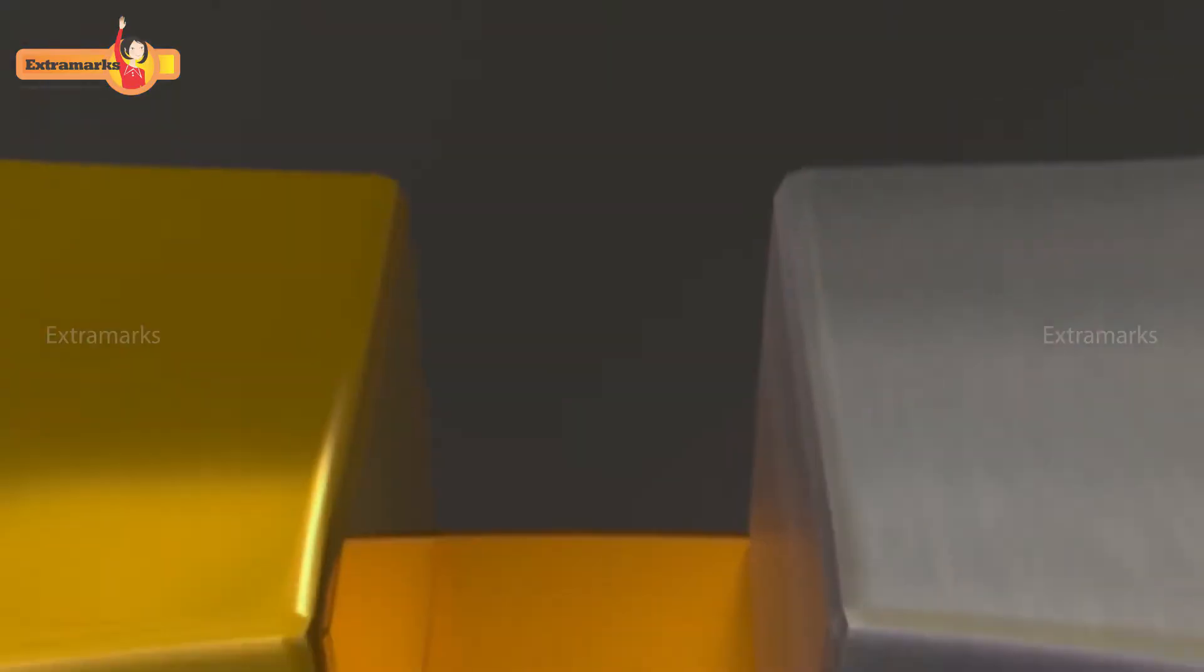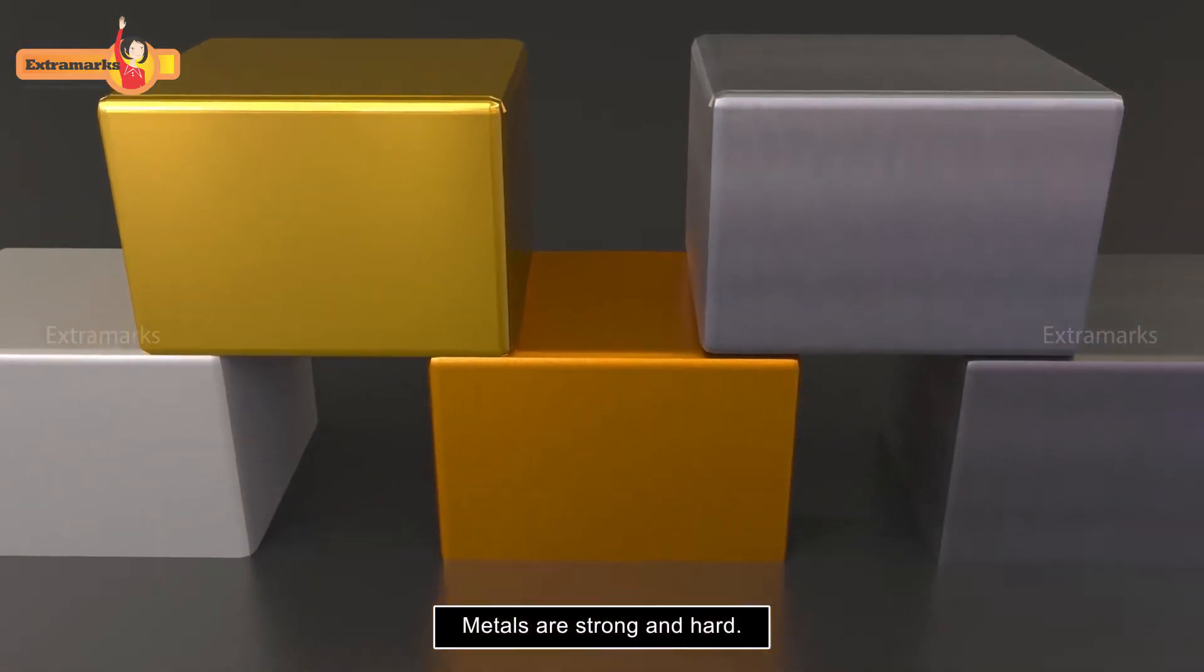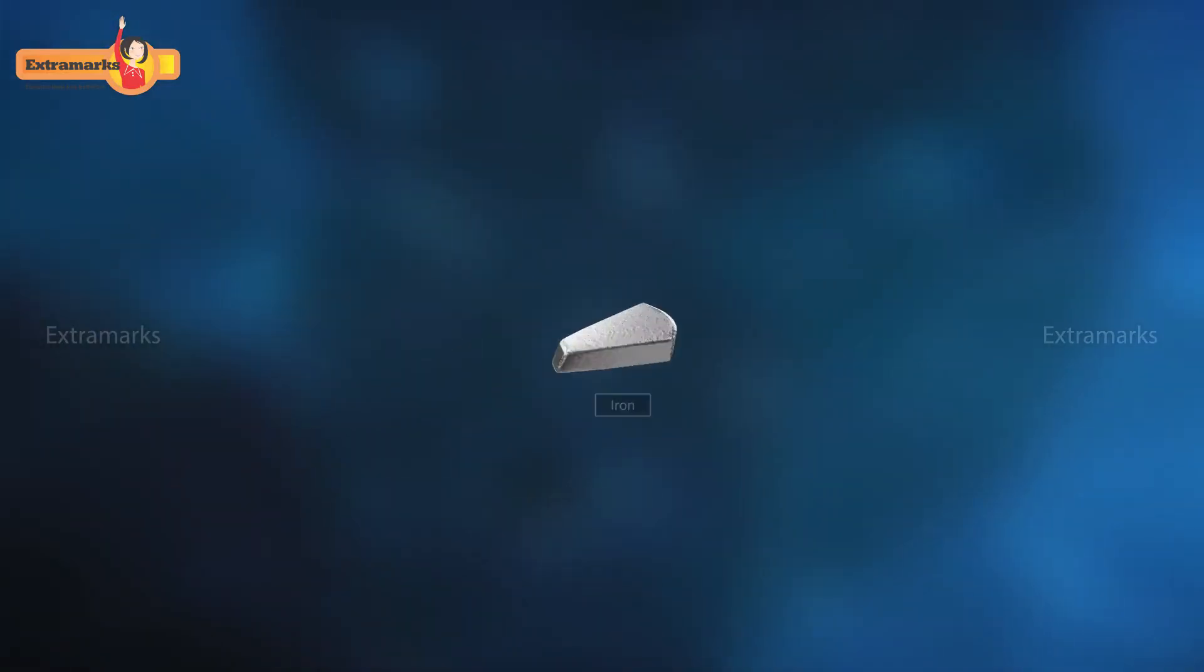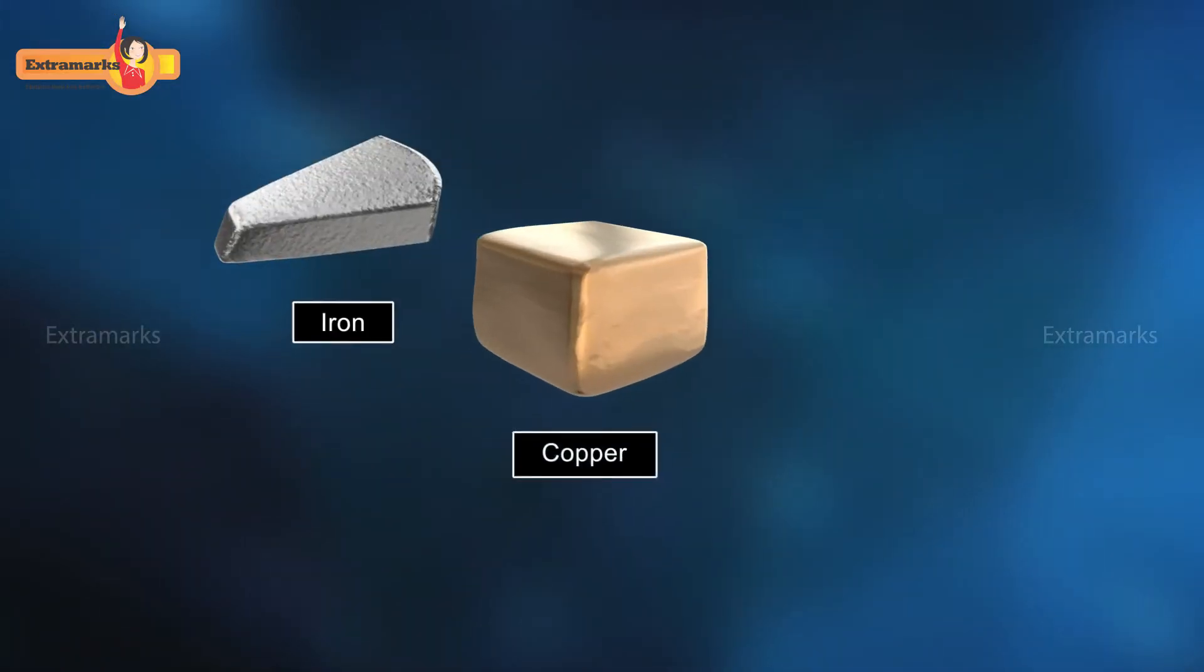Metals are strong and hard, and their hardness varies from metal to metal. Let us perform an activity to understand the hardness of metals. Take small pieces of iron, copper, sodium, and potassium.